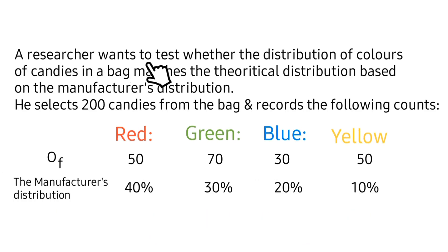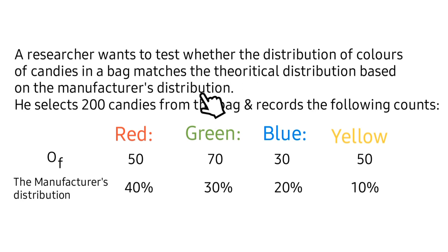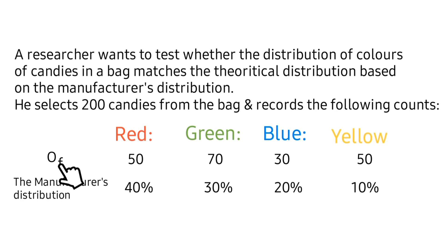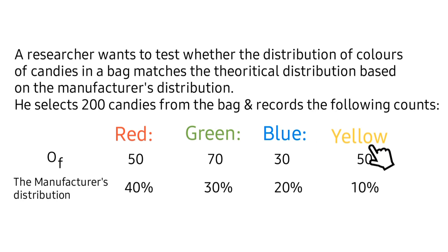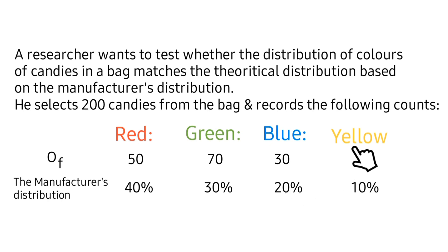A researcher wants to test whether the distribution of colors of candies in a bag matches the theoretical distribution based on the manufacturer's distribution. He selects 200 candies and records the following counts: red — 50 observed; green — 70 observed; blue — 30 observed; yellow — 50 observed. The manufacturer's distribution is: red 40%, green 30%, blue 20%, yellow 10%.